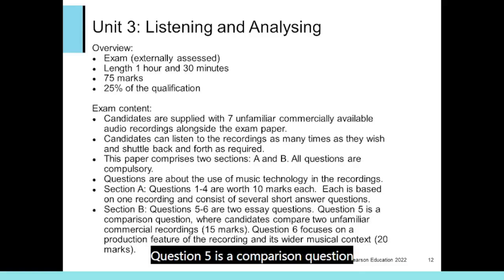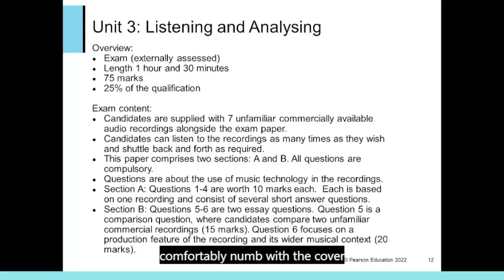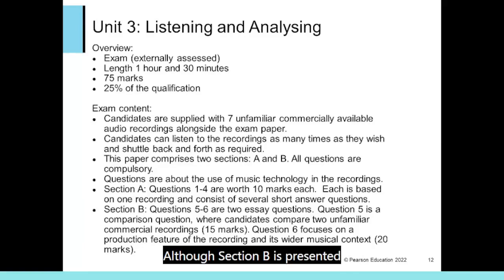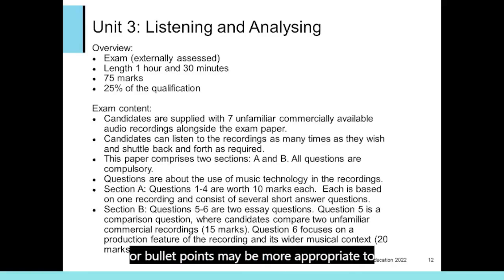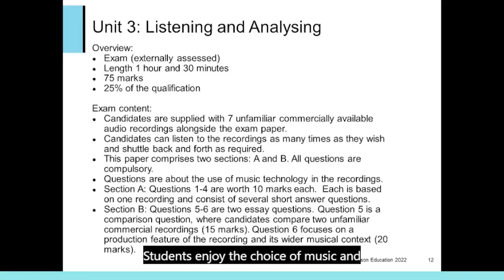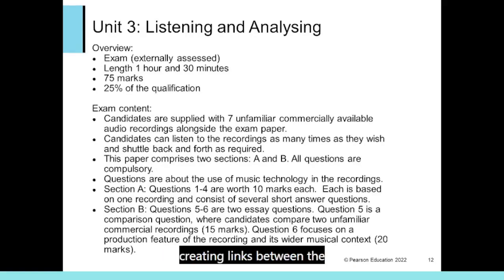Section B consists of two essay questions. Question 5 is a comparison question where candidates compare two unfamiliar commercial recordings — for example, in a recent exam, candidates compared the production features of the original Pink Floyd version of Comfortably Numb with the cover version by the Scissor Sisters. Question 6 focuses on a production feature of the recording and its wider musical context — for example, candidates were asked to evaluate the use of distortion in Glorybox by Portishead. Although Section B is presented as essay questions, candidates need not write in continuous prose; tables, diagrams or bullet points may be more appropriate. When teaching, I usually spend one lesson a week setting a test using past paper questions to stimulate class discussion about music that uses a range of technologies, always expanding the original questions to put the music in historical context and create links between music already studied.